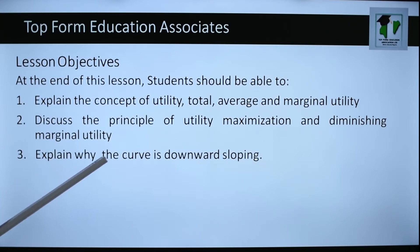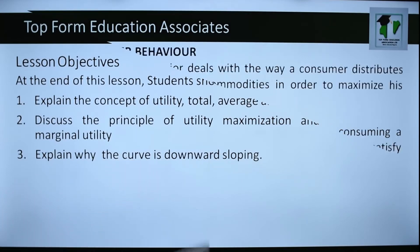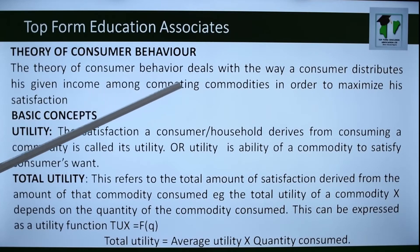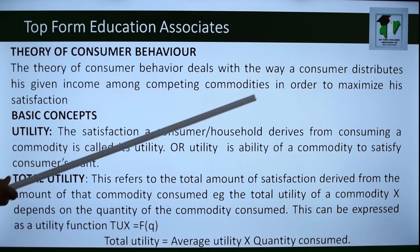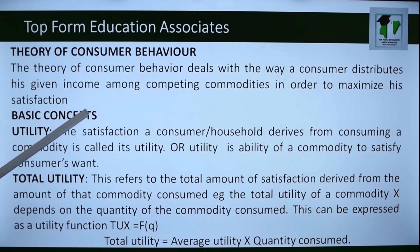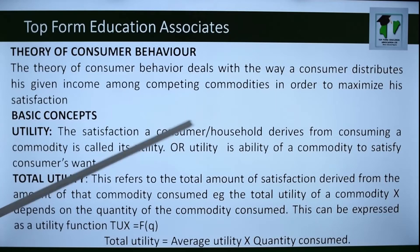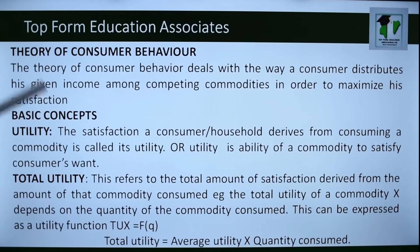Three, explain why the demand curve is downward sloping. Theory of consumer behavior — what is it all about? This theory deals with the way a consumer distributes his given income among competing commodities in order to maximize his satisfaction. The basic concept here is utility.